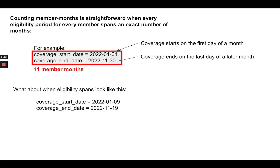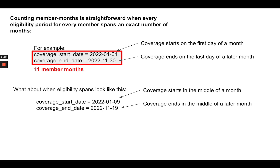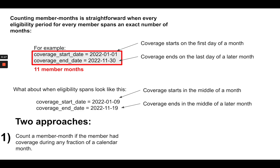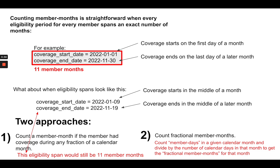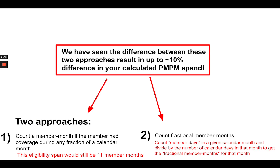But what about when eligibility spans look different — where coverage starts in the middle of a month and ends in the middle of a later month for a lot of beneficiaries? There are two approaches to dealing with these situations. One approach is to count a member month if the member had coverage during any fraction of a calendar month — in which case we would still have 11 member months. Another approach is to count fractional member months by counting member days in a given calendar month and dividing by the total number of days in that calendar month to get a fractional member month. Interestingly, we have seen that the difference between these two approaches can result in up to a 10% difference in your calculated PMPM spend. So how you choose to calculate member months can significantly alter your reported PMPM.